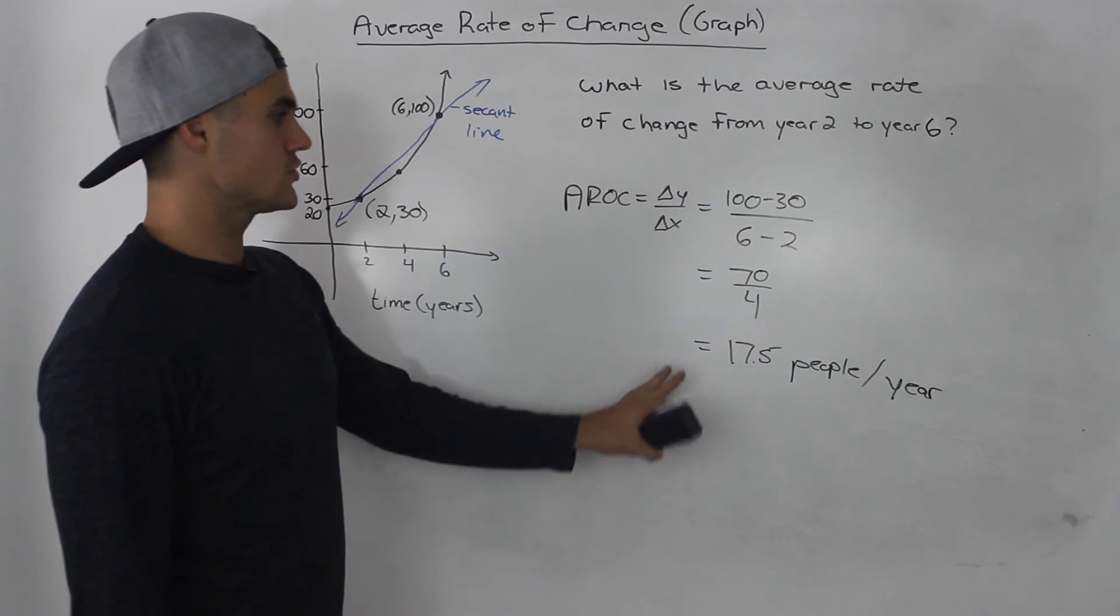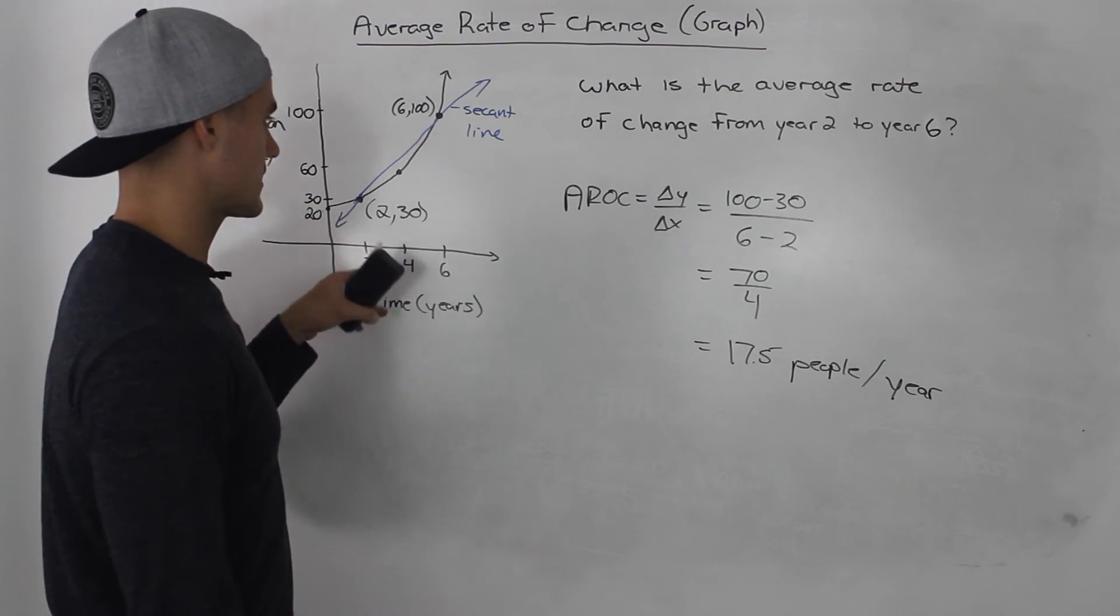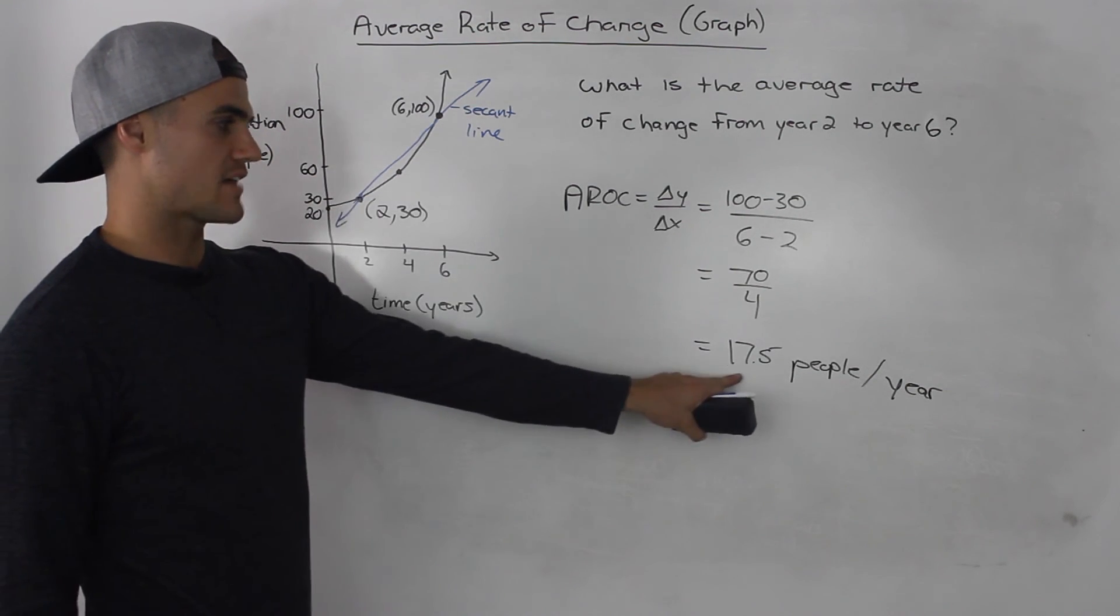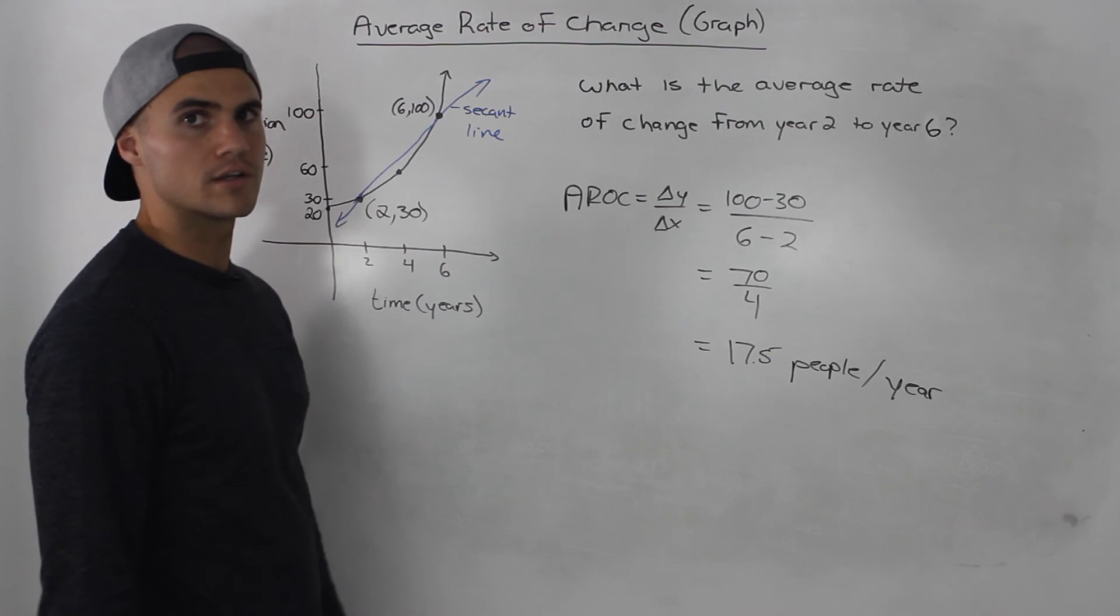So in conclusion, between years 2 and 6, on average the population is increasing at 17 and a half people per year.